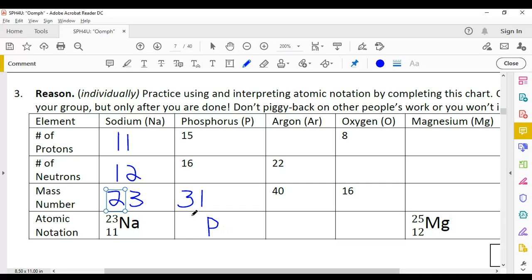And the mass number, the higher number, is 31. And the atomic number, which is the number of protons, that's 15. Okay, let's move on to the next one, argon.